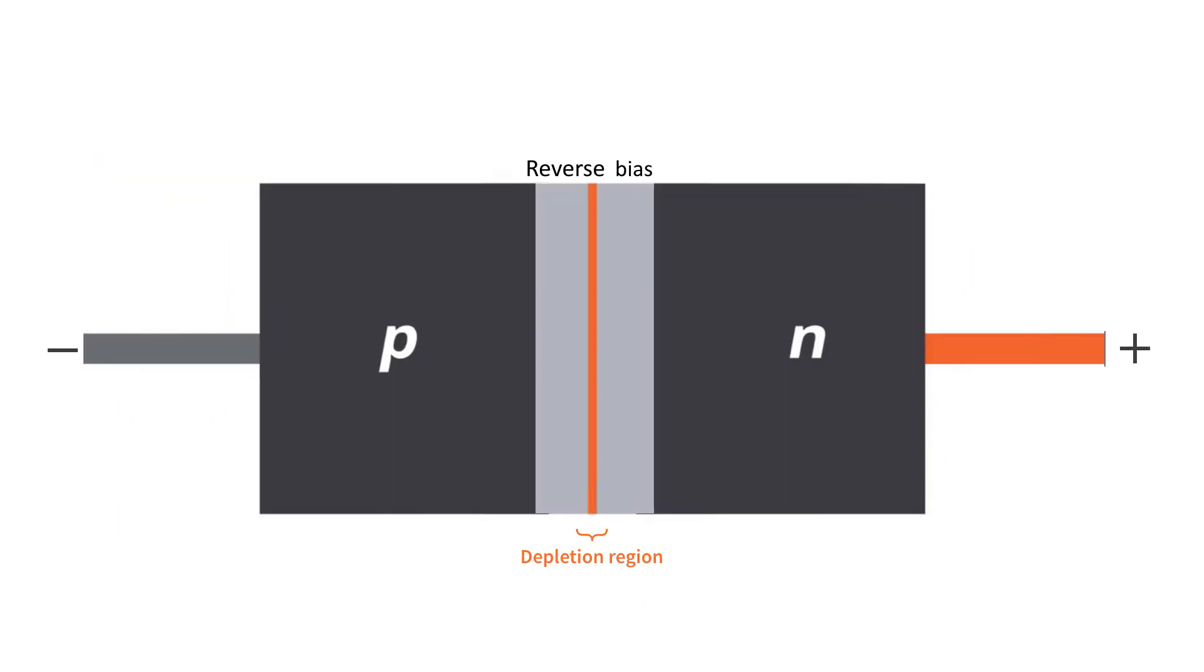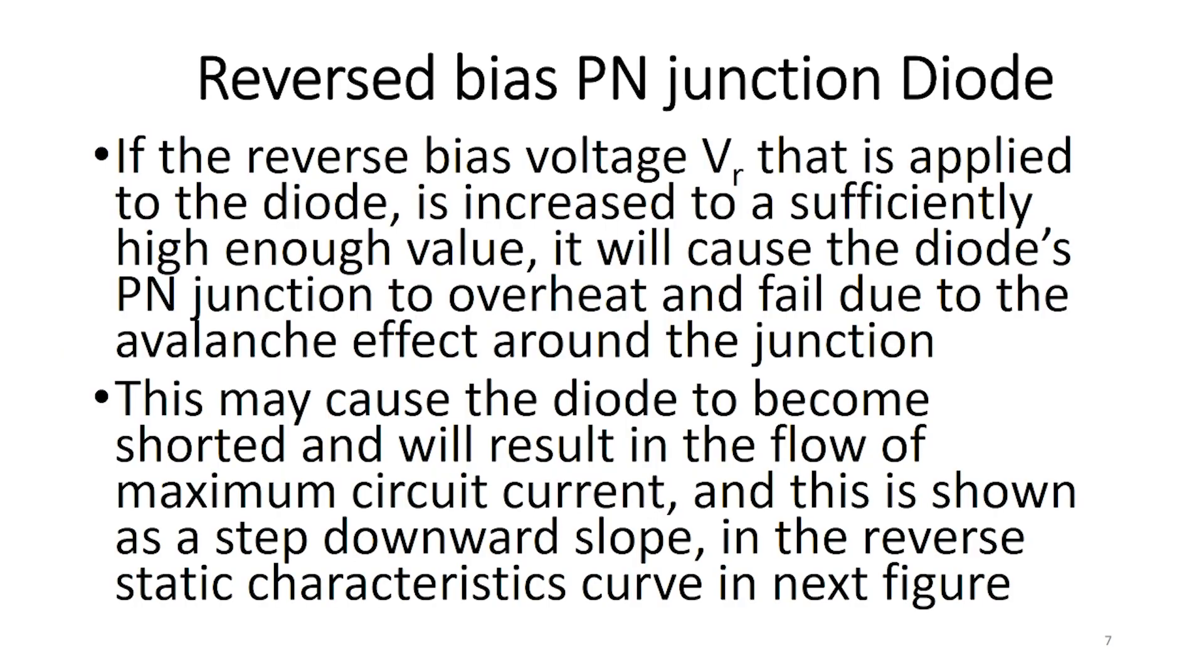If the reverse bias voltage Vr that is applied to the diode is increased to a sufficiently high enough value, it will cause the diode's P-n junction to overheat and fail due to the avalanche effect around the junction. This may cause the diode to become shorted and will result in the flow of maximum circuit current, and this is shown as a step downward slope in the reverse static characteristics curve in the index figure.